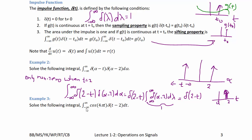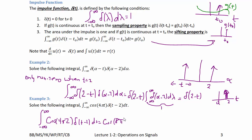Solve the integral from −∞ to +∞ of cos(4πt)·δ(t − 2) dt. By the sifting property, this equals cos(4π·2) times the integral of δ(t − 2) dt = cos(8π) · 1 = cos(8π) = 1.